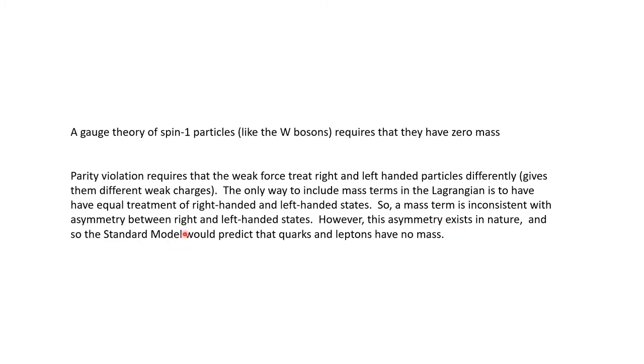Now, the only way to include mass terms in the Lagrangian when we're writing a gauge symmetry for the weak force is to have equal treatment of the right-handed and left-handed states. So, a mass term in the Lagrangian would be inconsistent with an asymmetry between right- and left-handed states. But this asymmetry obviously exists in nature, as we just saw. And so, the standard model would predict that quarks and leptons, like, for example, the neutrinos we were just talking about, or electrons, as Madame Wu demonstrated, parity violation with electrons for weak force decays, it would predict that they would have to have no mass if we wanted to stay consistent with gauge symmetry.